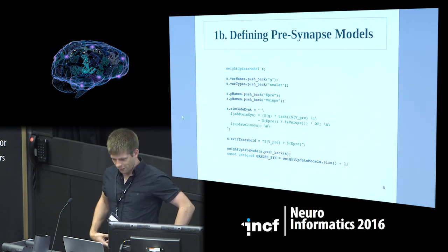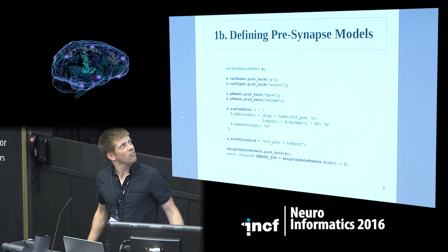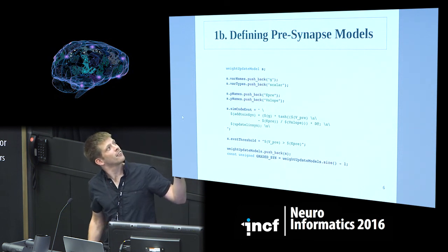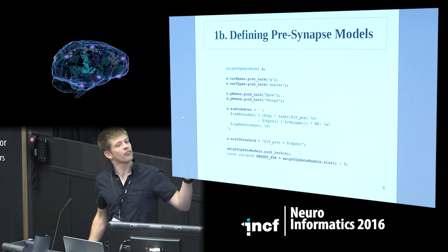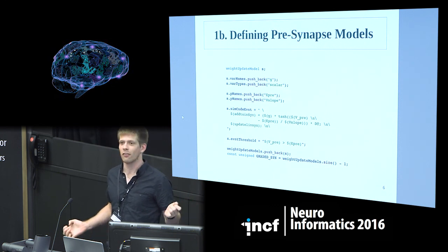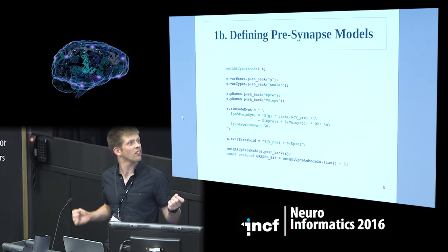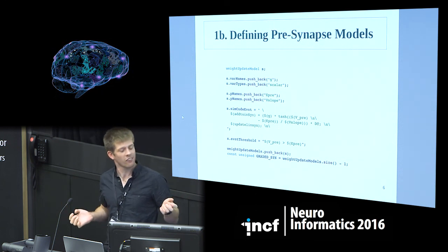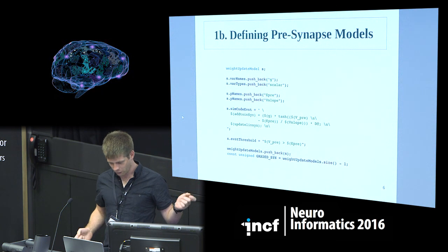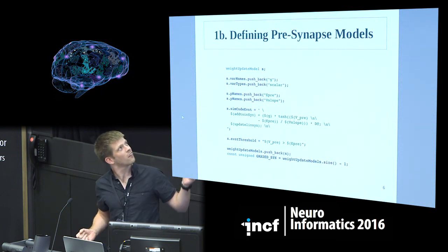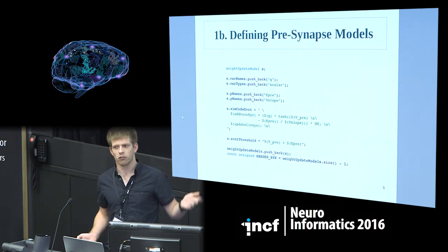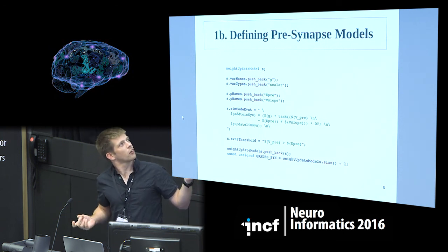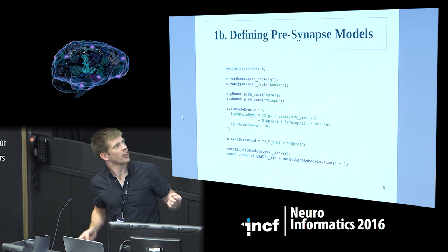You also define your pre-synapse models. For example, I've implemented a simple graded synapse model here, but you can also do regular pulse-coupled synapses, STDP spike-time-dependent plasticity rules, etc. Similarly, you define your variables, the type of each variable — real number, integer — your parameters, and your simulation code as a string.